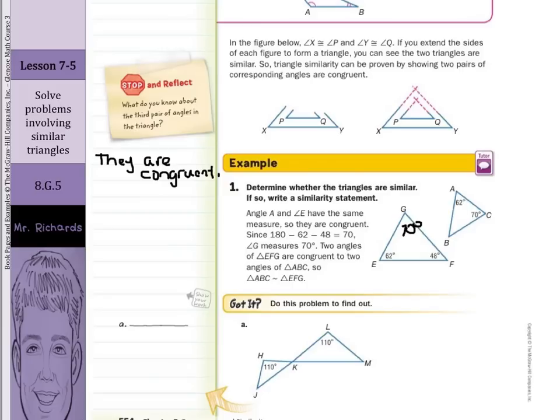As you can see, we have the 62 and the 70 now. So, these are two similar triangles.